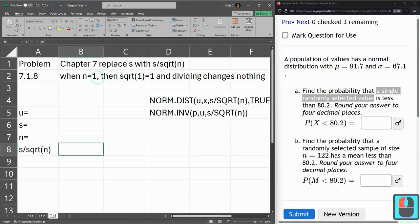And n is 1, when n is 1, the square root of 1 is 1. And dividing by this square root of 1 doesn't change anything. And this is basically a problem right out of chapter 6. So we'll do this one first.